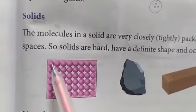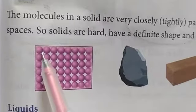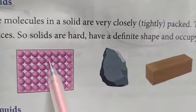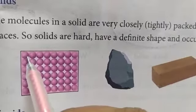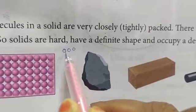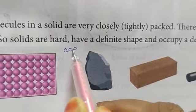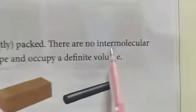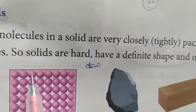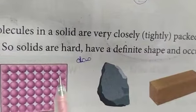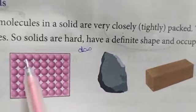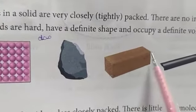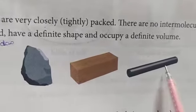In solids, molecules will be very closely packed — see here, these are molecules, very closely or tightly packed. The spaces between molecules are called intermolecular spaces. But in solids we don't have intermolecular spaces because they are very closely packed. Because of this tight packing, solids are hard and have a definite shape and occupy a definite volume.